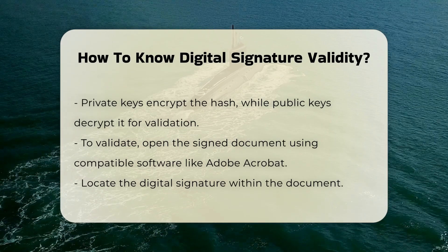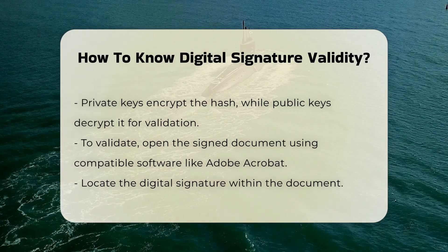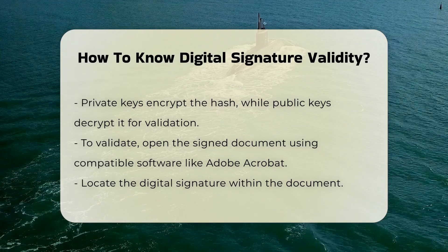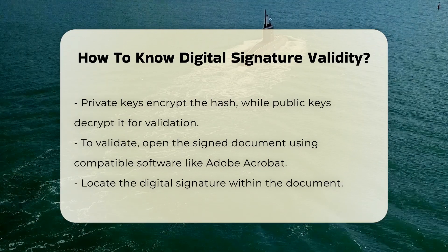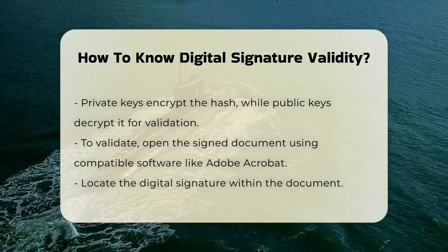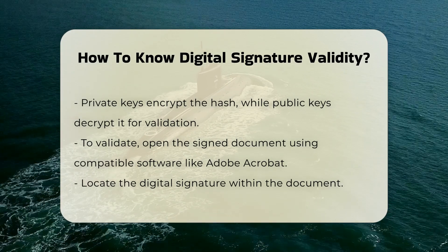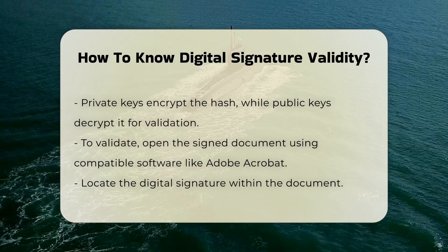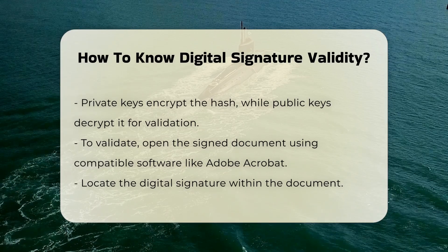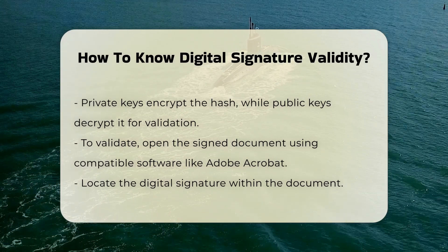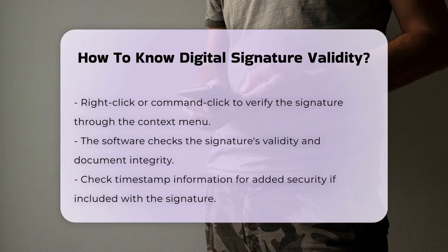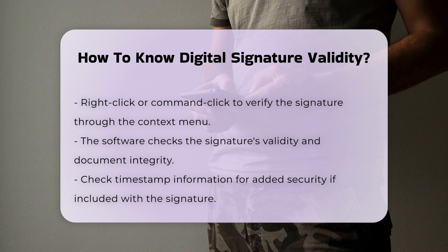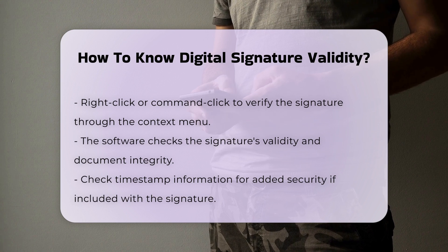Steps to Validate a Digital Signature. Validating a digital signature involves several steps. Open the digitally signed PDF using compatible software like Adobe Acrobat or Power PDF. Locate the digital signature object within the document. Right-click or Command-click on the signature and select Verify Signature from the context menu. The software will check the information behind the signature and display a message indicating whether the signature is valid. The validation process also checks if the signed content was altered after signing; if changes were made, the verification ensures that the signer allowed the changes.